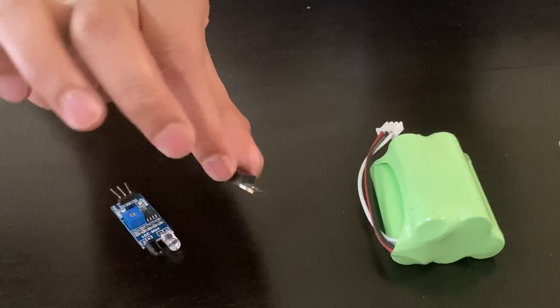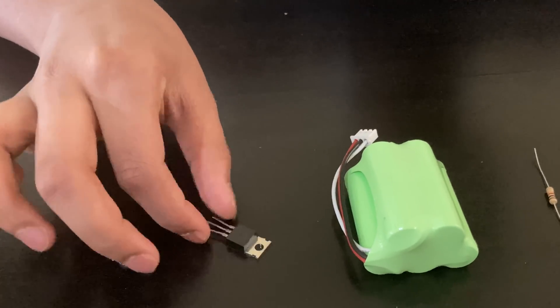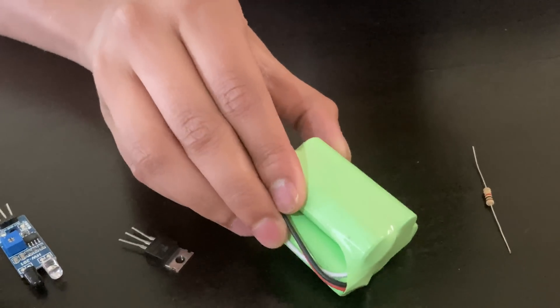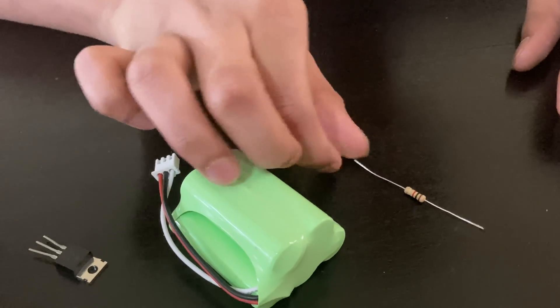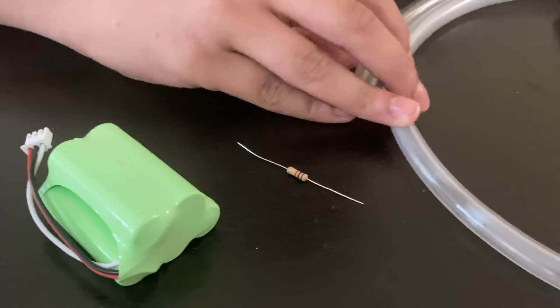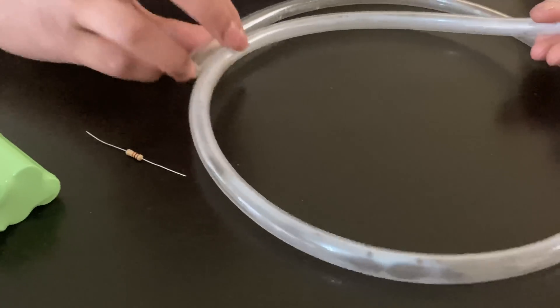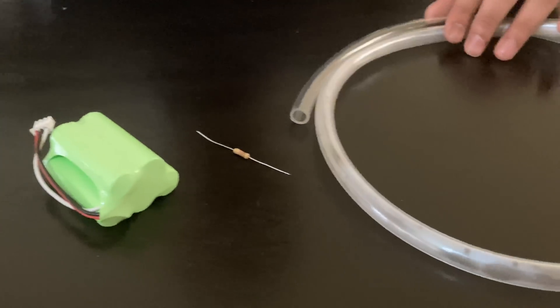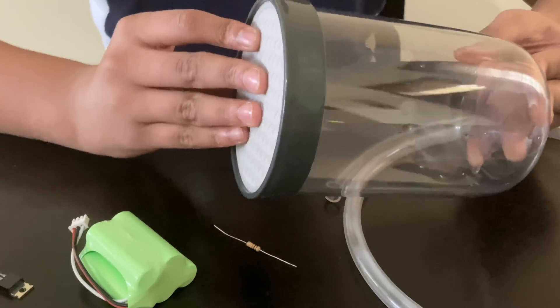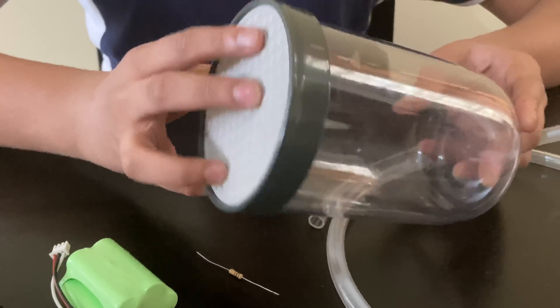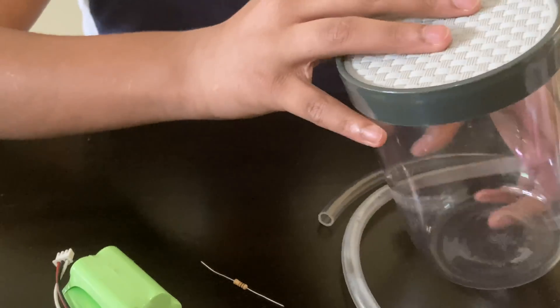a TIP32C transistor, a 5 volt battery, a 1k ohm resistor and a water pump pipe and you will also need an ordinary kitchen container.